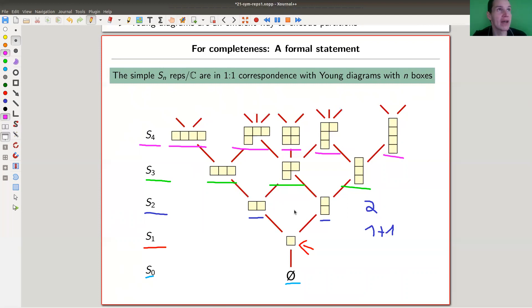So the simple representations are in one-to-one correspondence with those nice arrangements in the plane. Okay, you might say then, okay, that falls a little bit out of the blue. Why are those nice arrangements actually really nice?